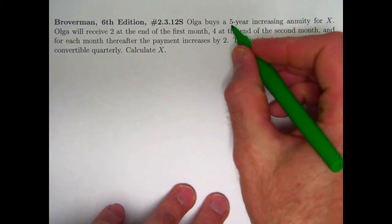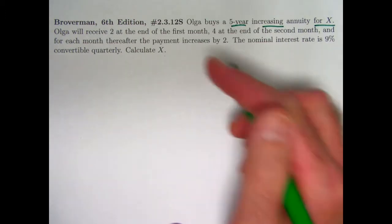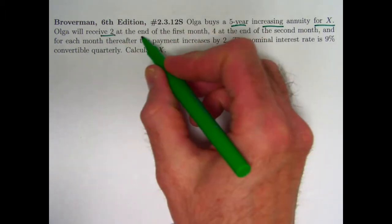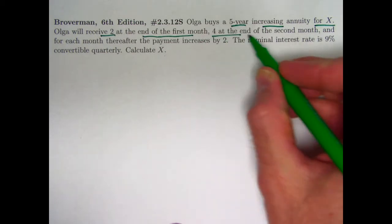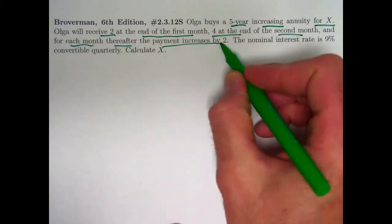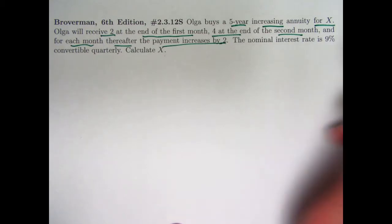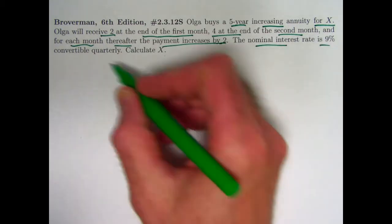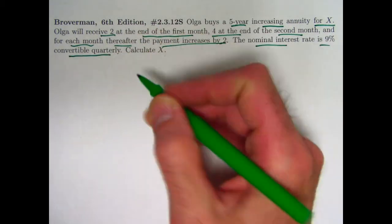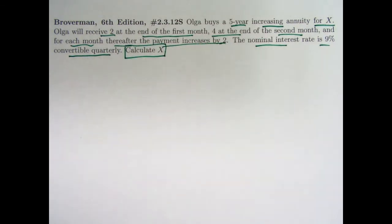Olga buys a five-year increasing annuity for X, so that X is the price she pays. That's the present value. She's going to receive two at the end of the first month, four at the end of the second month, and for each month thereafter, the payment increases by two. The nominal interest rate is nine percent, but it's convertible quarterly, not monthly. Calculate X, the present value of this annuity.